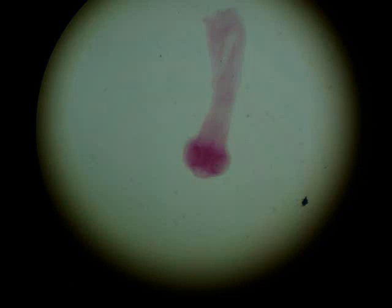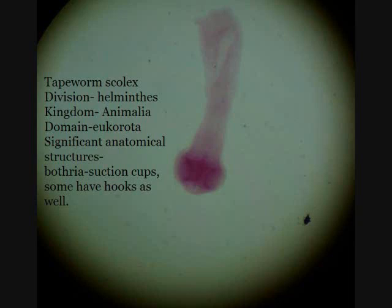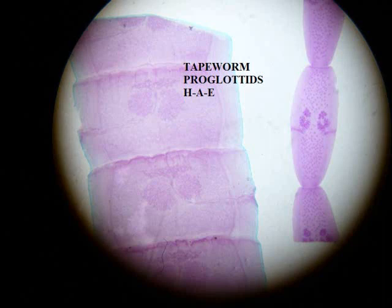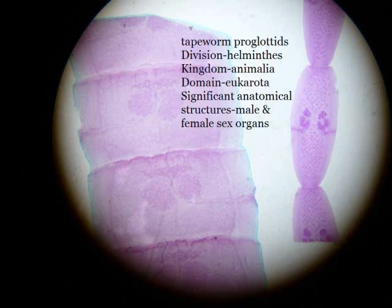Sequelae refers to the permanent damage often left behind by an infection. For example, many people who survive meningitis will have seizure disorders afterwards, directly attributed to the infectious process. People can also get pneumonia that permanently damages the lungs so air exchange cannot occur. Sequelae are permanent physiological or anatomic symptoms that persist after the infection is gone.